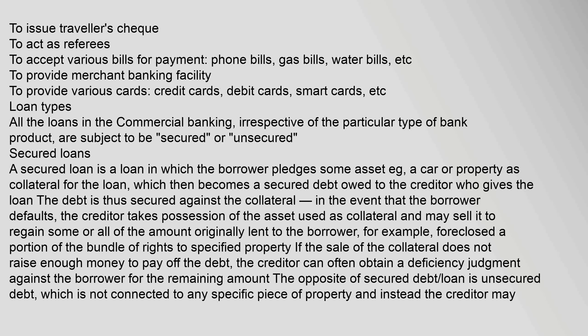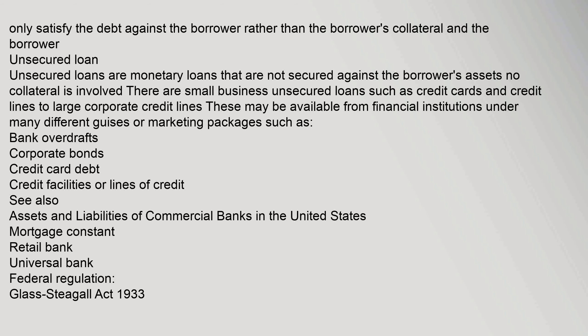The opposite of secured debt is unsecured debt, which is not connected to any specific piece of property; instead, the creditor may only satisfy the debt against the borrower rather than the borrower's collateral. Unsecured loans are monetary loans that are not secured against the borrower's assets — no collateral is involved. These range from small business unsecured loans such as credit cards and credit lines, to large corporate credit lines, available from financial institutions under various packages such as bank overdrafts, corporate bonds, credit card debt, and credit facilities or lines of credit.